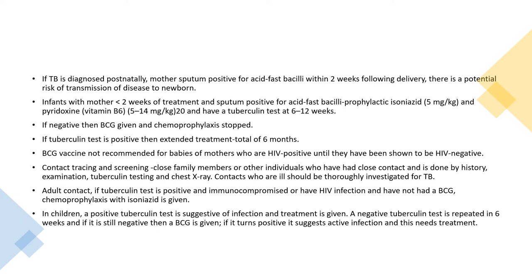Contact tracing includes close family members and other individuals who have had close contact, assessed by history, examination, tuberculin testing, and chest X-ray. Contacts who are ill should be thoroughly investigated for TB. Adult contacts who are tuberculin positive and are immunocompromised, HIV positive, or have not had BCG, should receive chemoprophylaxis with isoniazid. In children, a positive tuberculin test is suggestive of infection and treatment is given. A negative tuberculin test should be repeated in six weeks; if still negative, BCG can be given. If it turns positive, this suggests active infection requiring treatment.